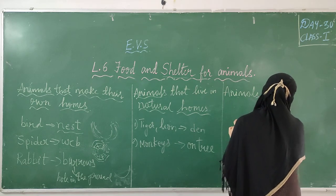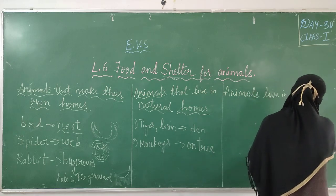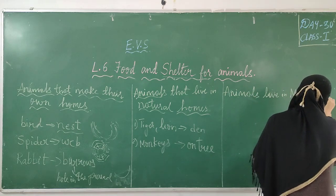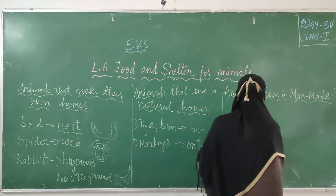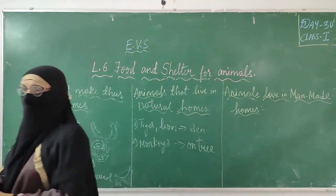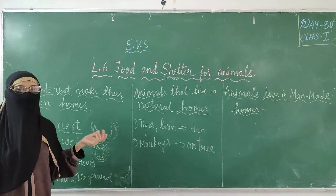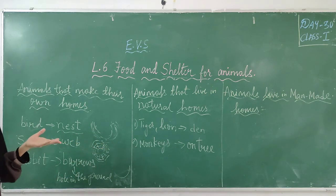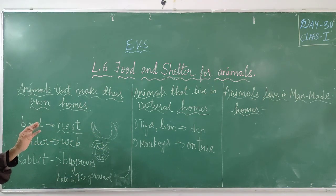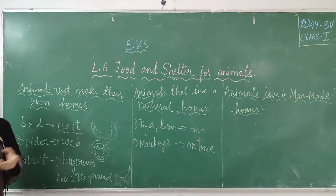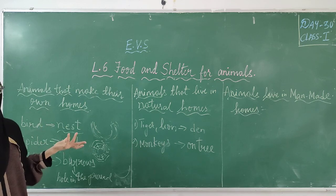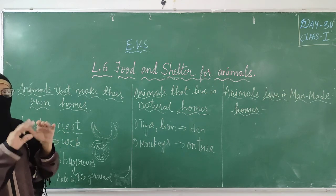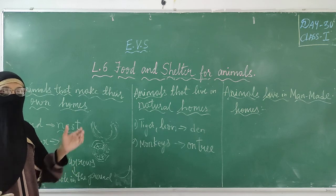Some animals live in man-made homes. What do you mean by man-made? Domestic animals — animals that we can see in the farms — are called domestic animals. Animals like cow, goat, sheep, horse. These are the domestic animals that live in the farms, and we make special homes for them to stay in.